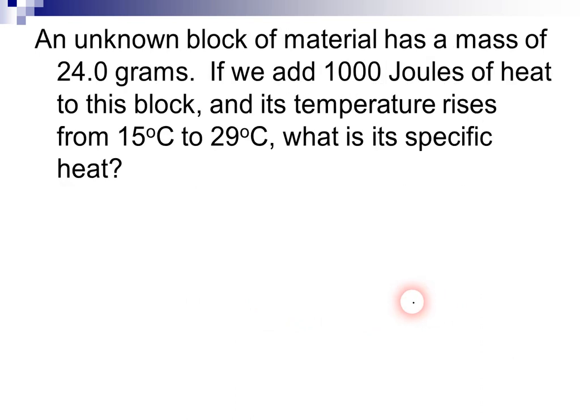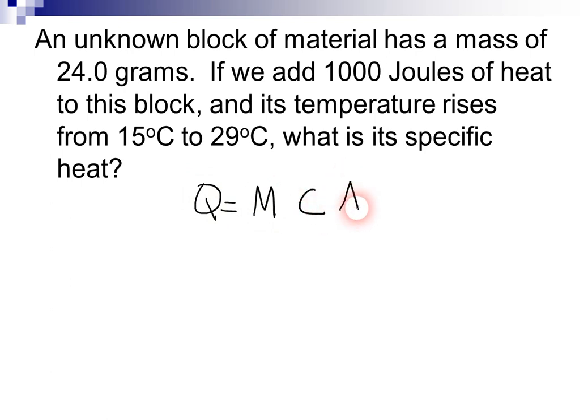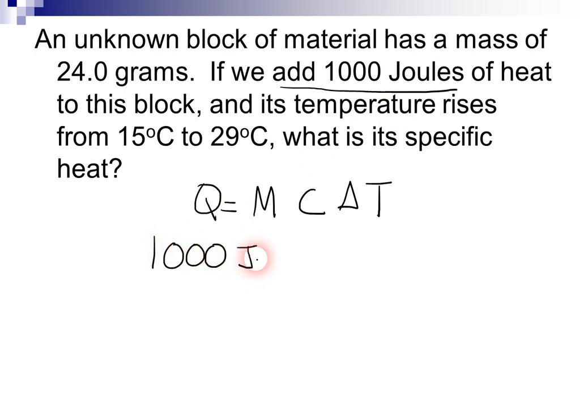Let's try another one. We have an unknown block of material that has a mass of 24.0 grams. If we add 1,000 joules of heat to this block and its temperature rises from 15 degrees Celsius to 29 degrees Celsius, what is its specific heat? We're using the equation Q equals MC delta T. Q is joules, and this time it tells us that we're adding 1,000 joules of heat — so that's our value for Q.